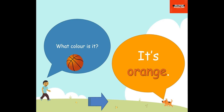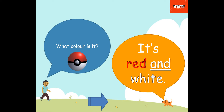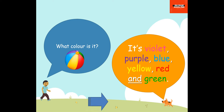What color is it? It's orange. What color is it? It's red and white. What color is it? It's violet, purple, blue, yellow, red, and green.